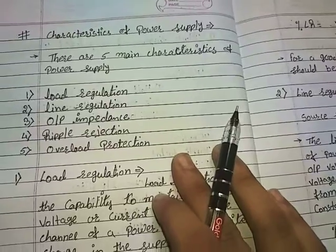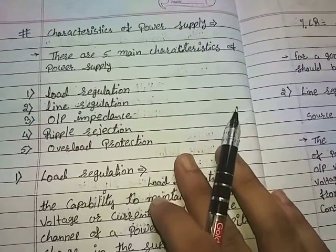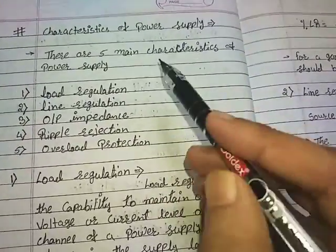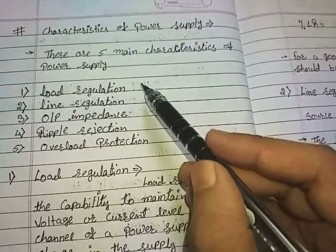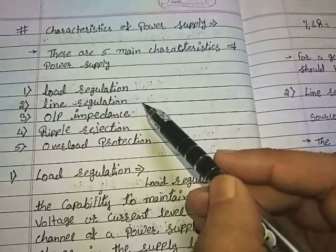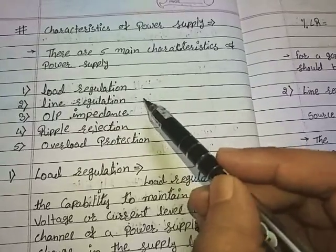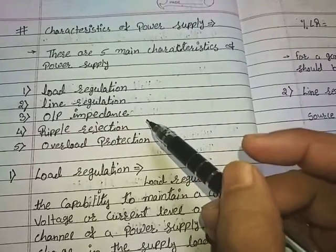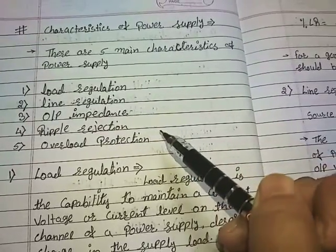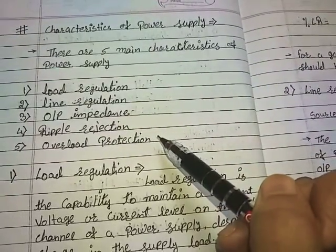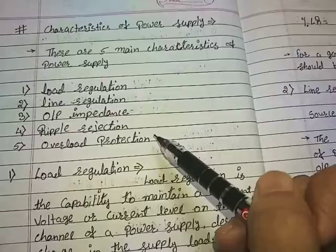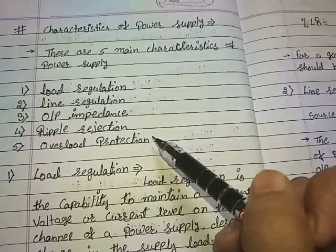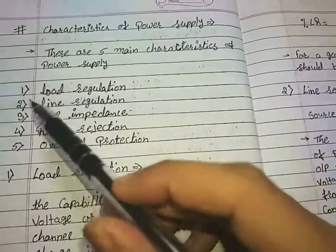For a good power supply there are five main characteristics: load regulation, line regulation, output impedance, ripple rejection, and overload protection. So let's study in detail about these characteristics.